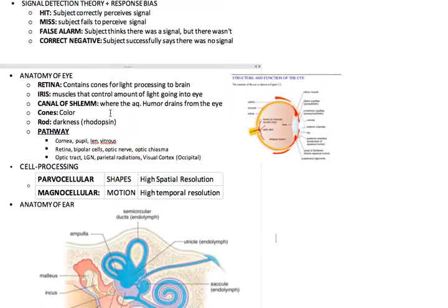Cones detect color and darkness is determined by rods, which contain rhodopsin. The normal visual pathway is cornea, pupil, lens, vitreous humor, which then goes to the retina, bipolar cells, optic nerve, optic chiasm, and then optic tract, lateral LGN, parietal radiation, and then visual cortex.